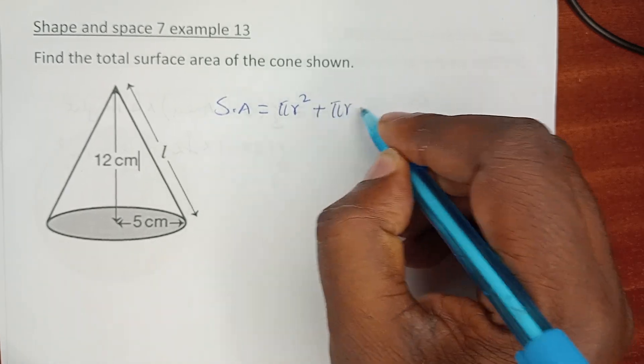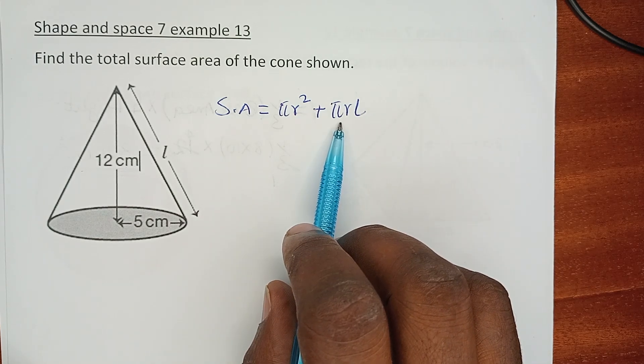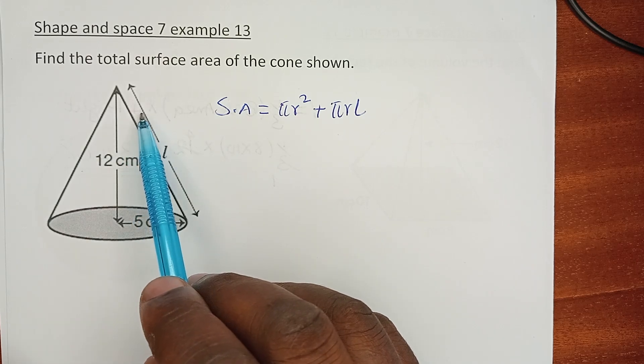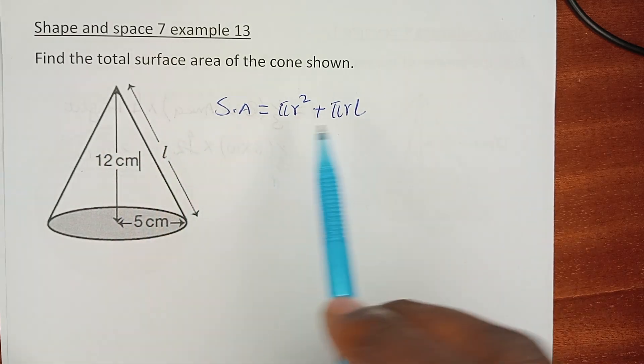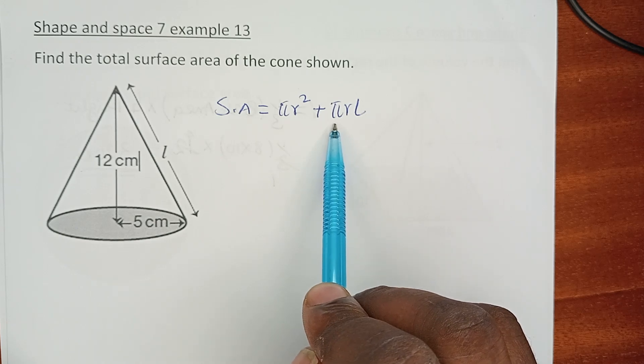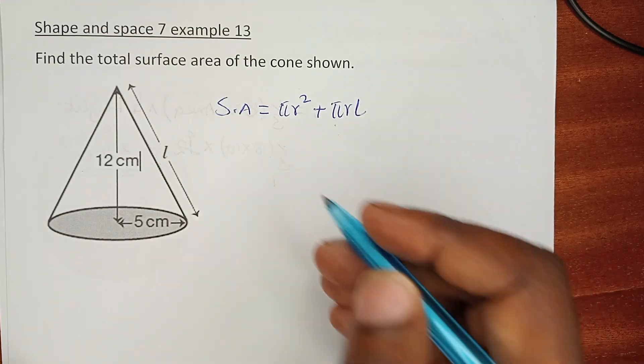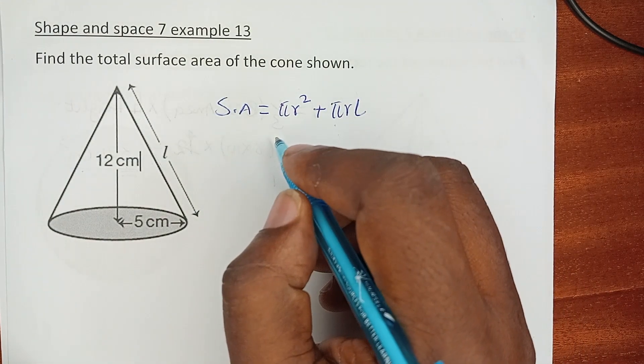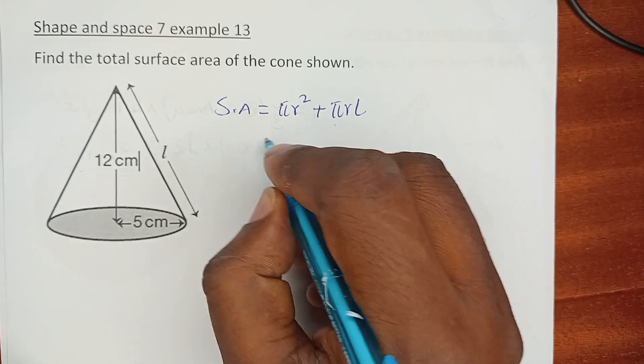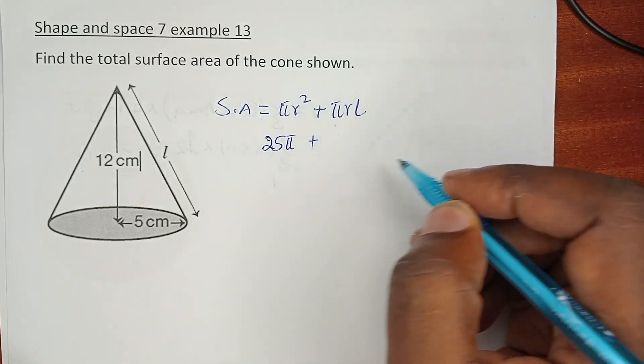This you will capture in the previous video. If we have a cone, then the area of the curved surface is found by this formula where L is the length of the slanting side. The radius is 5, so 5² times π is 25π plus πrL.